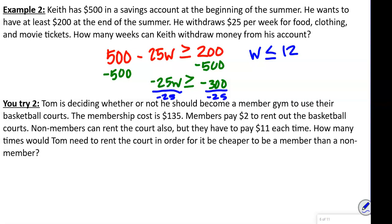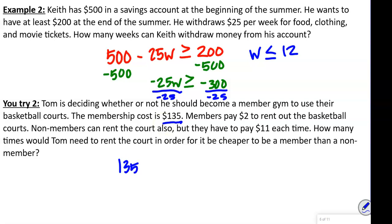Go ahead and try that, then come back when done. Tom is deciding whether to become a gym member to use their basketball courts. The membership costs $135. Members pay $2 to rent the basketball courts. Non-members can rent the court too, but they pay $11 each time. How many times would Tom need to rent the court for it to be cheaper to be a member?